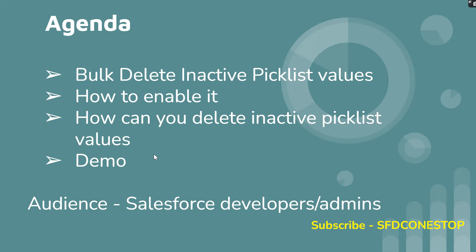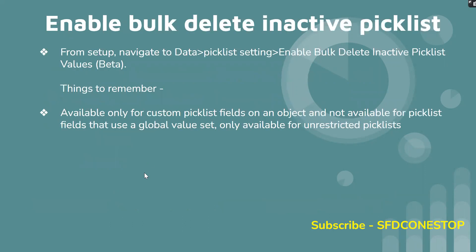Over the period of time, the number of inactive picklist values in the system were increasing and it may reach the limit. So there was only one solution available, which was to remove those values one by one. But now as a part of Summer 22, in order to solve this business problem, Salesforce came up with this new feature called bulk delete inactive picklist values.